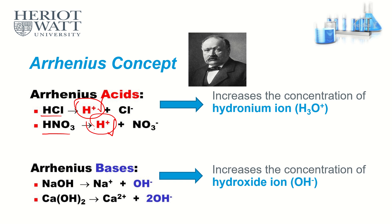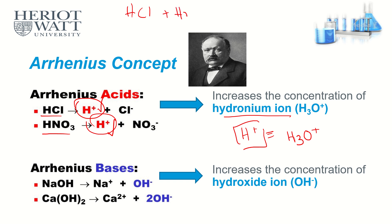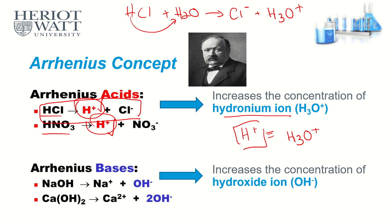Don't get confused: H⁺ is equivalent to H₃O⁺. For example, HCl with water dissociates to give Cl⁻ and H₃O⁺. But we also write the simpler form: HCl dissociates directly into H⁺ and Cl⁻ without showing water, since water is just the solvent. Both forms are acceptable — hydrogen ion and hydronium ion are the same thing.